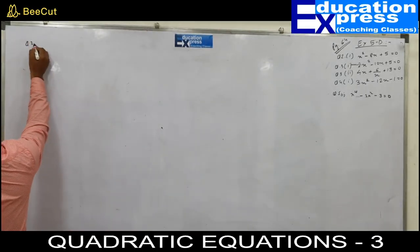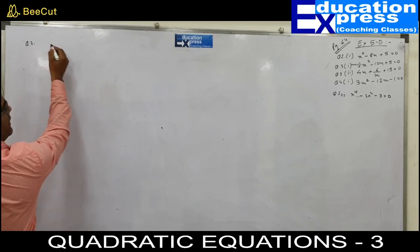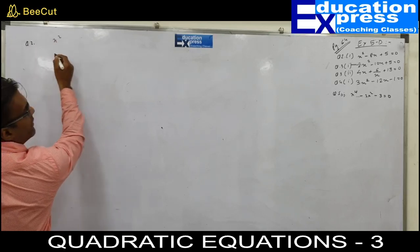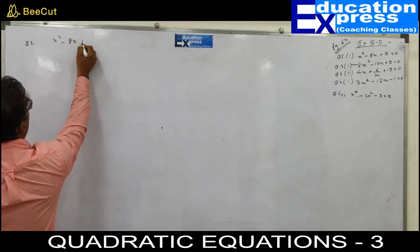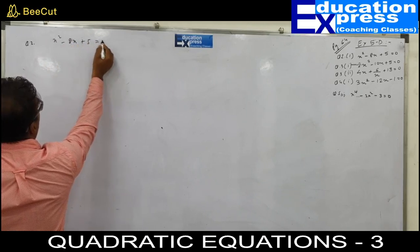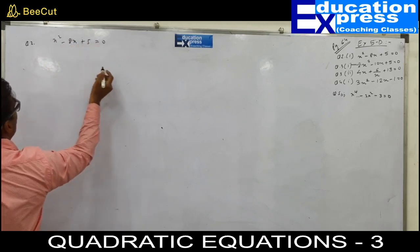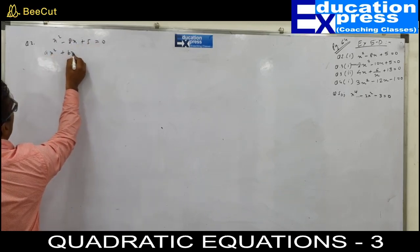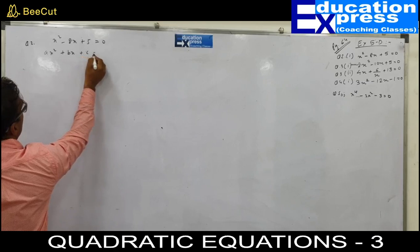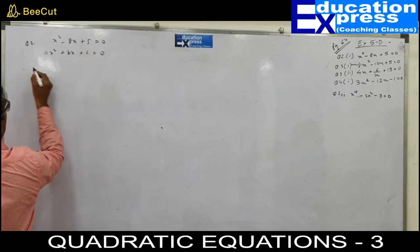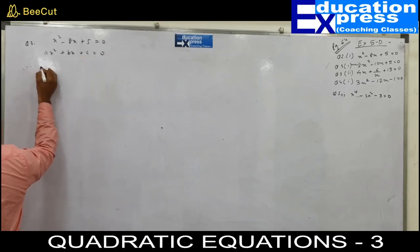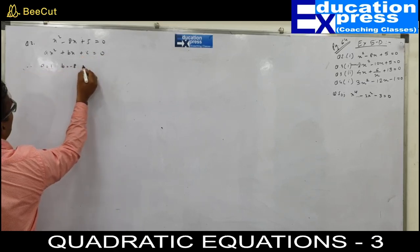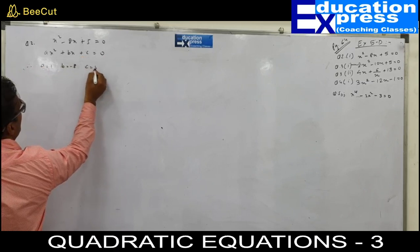Question number 2: x squared minus 8x plus 5 equals to 0. It is in the standard form. Compare it to ax squared plus bx plus c equals to 0. So a would be 1, b would be minus 8, c would be 5.